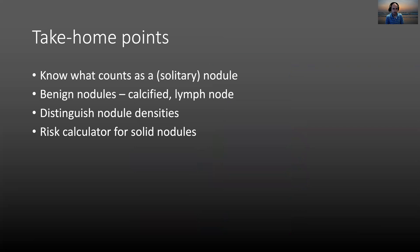To summarize, we covered what counts as a pulmonary nodule or a solitary pulmonary nodule. We went over examples of benign nodules such as calcified nodules and intrapulmonary lymph nodes. We described different nodule densities, talked about the oval nodule, and ended with risk calculation and risk assessment for solid pulmonary nodules. I hope you found this helpful — thank you.